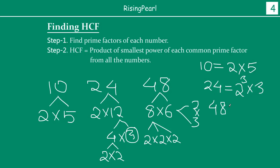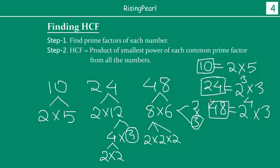And finally for 48, I have how many 2s? There are four 2s, multiplied by 3. So looking at each of these numbers — 10, 24, and 48 — the common factors are: 10 has 2 and 5, 24 has 2 and 3, 48 has 2 and 3. So the only common factor is 2. The HCF will be 2, and we look at the smallest power of 2: here the power is 1, here 3, and here 4. So the HCF is 2 to the power 1, which is 2. So 2 is the HCF of the numbers 10, 24, and 48.